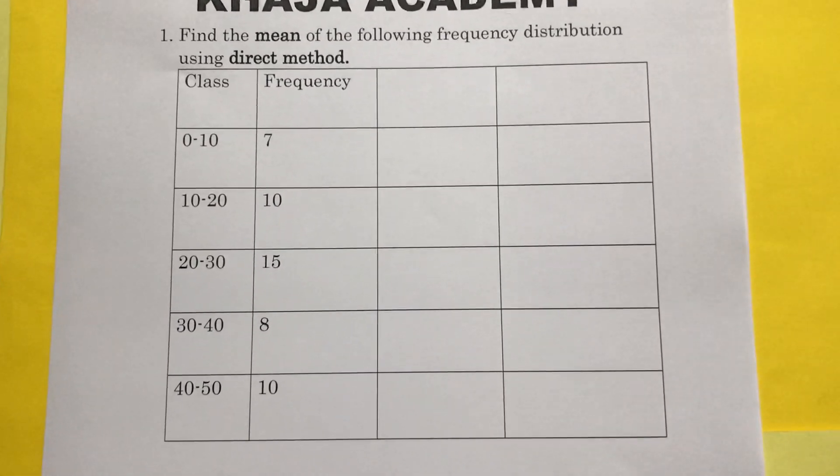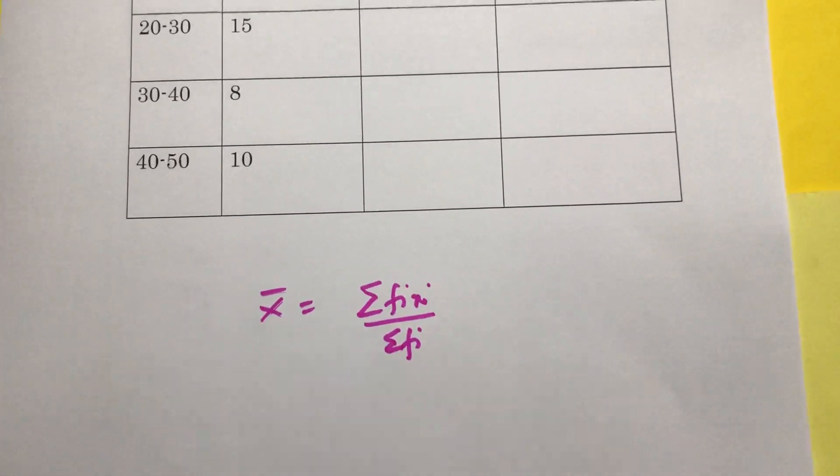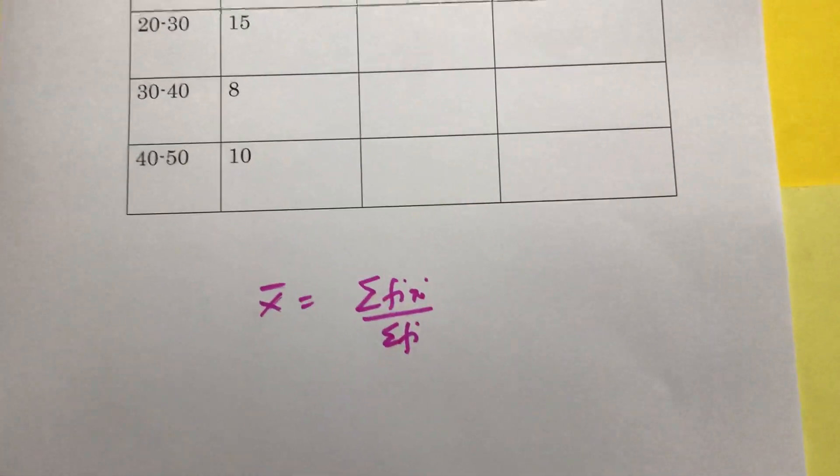Find the mean by using direct method. The direct method formula is sigma fi xi by sigma fi.